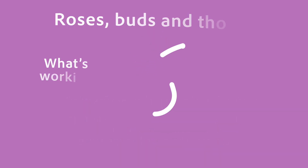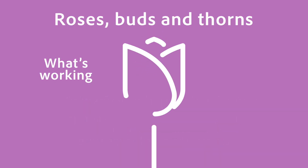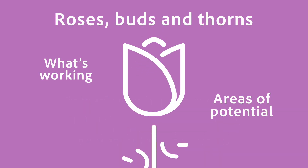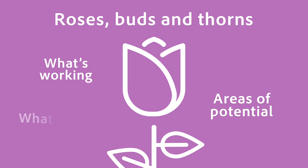Students point out what's working — roses — areas of potential — buds — and what is getting in the way — thorns.